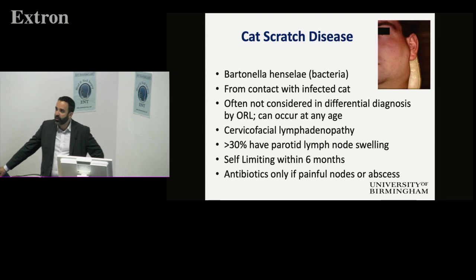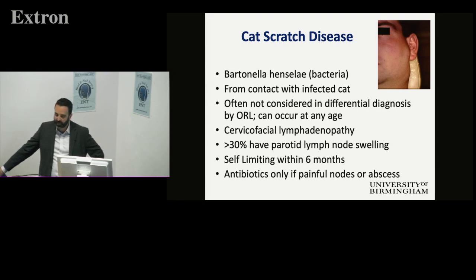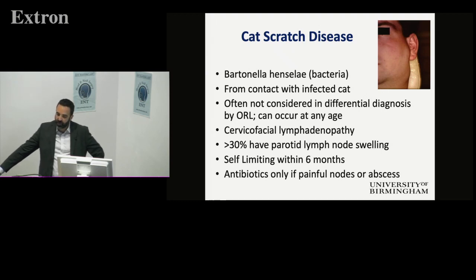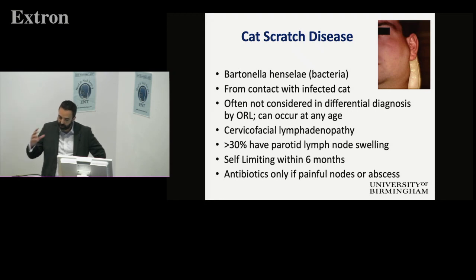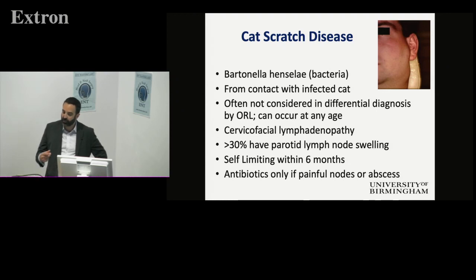Cat scratch disease isn't just in children — it can occur at any age. It usually happens within a couple of weeks of having the infected scratch, and it's not just your armpit or local nodes. You can get lymph nodes within the parotid affected, giving you a big parotid swelling. It usually goes down, and you don't tend to need antibiotics for it unless it progresses to a suppurative infection.